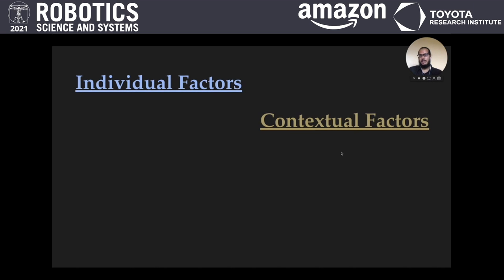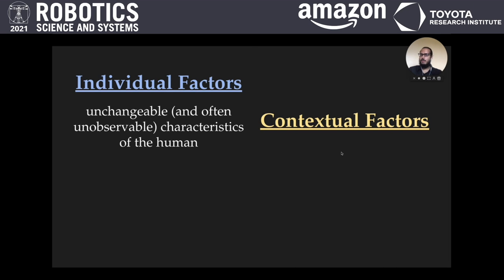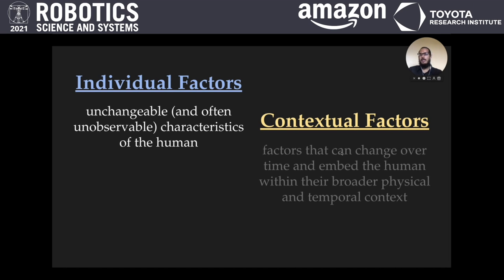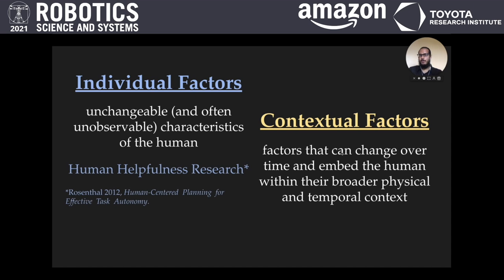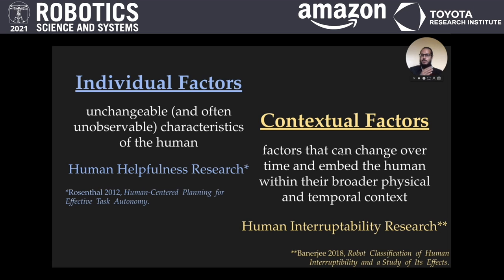individual factors and contextual factors. Individual factors are unchangeable and often unobservable characteristics of the human. Contextual factors can change over time and embed the human within their broader physical and temporal context. Past work in human helpfulness has focused on individual factors, and work in human interruptibility has focused on contextual factors. We bring these two together.